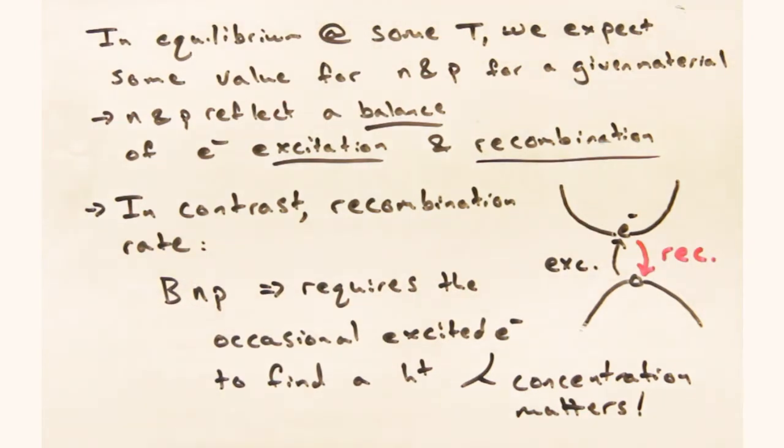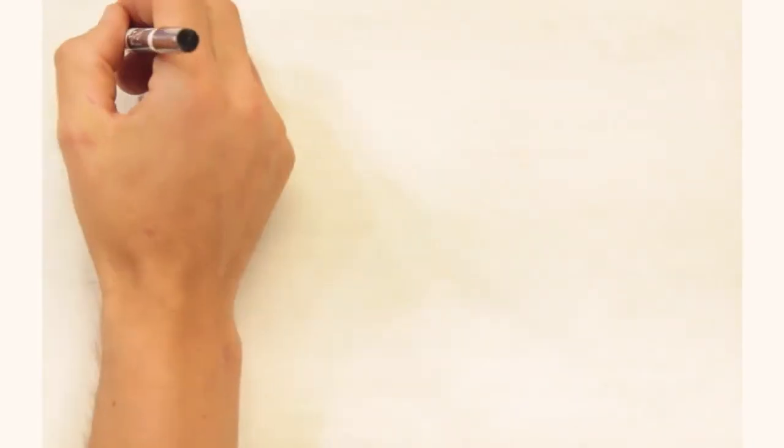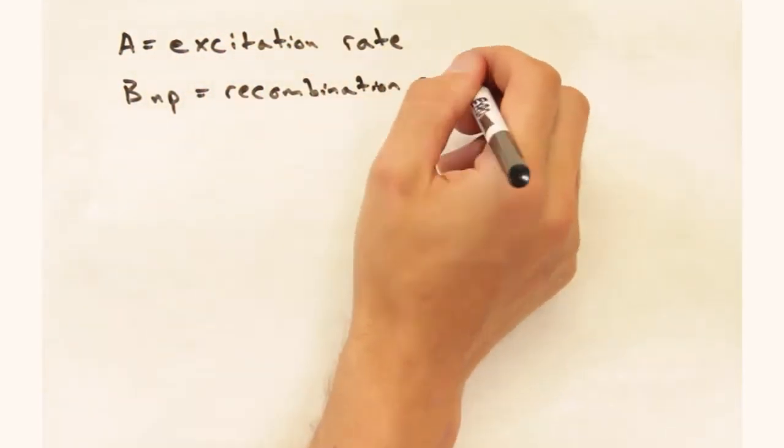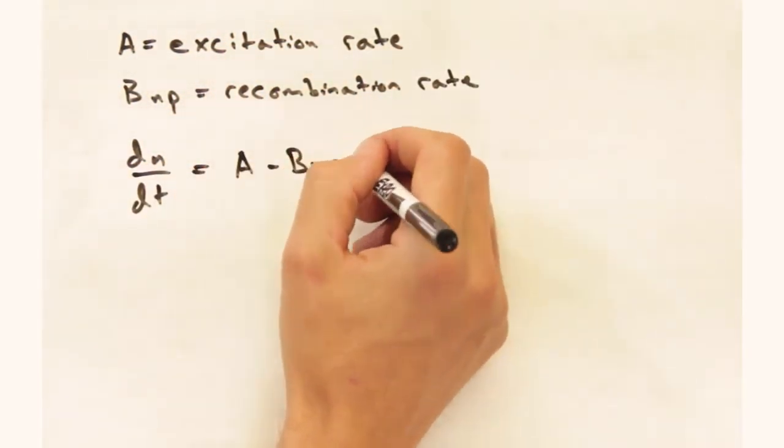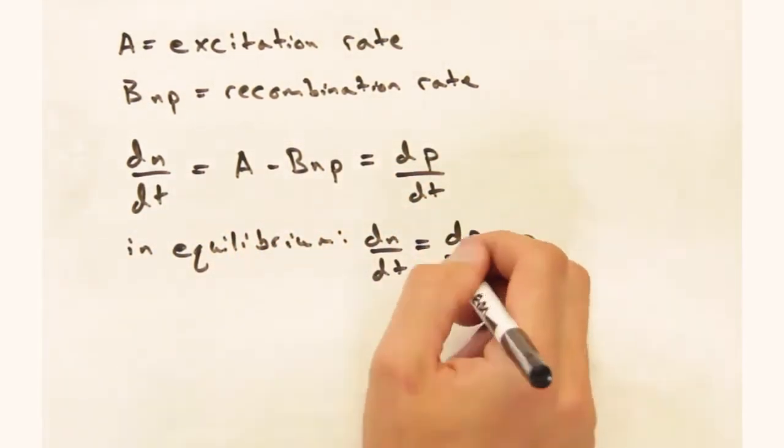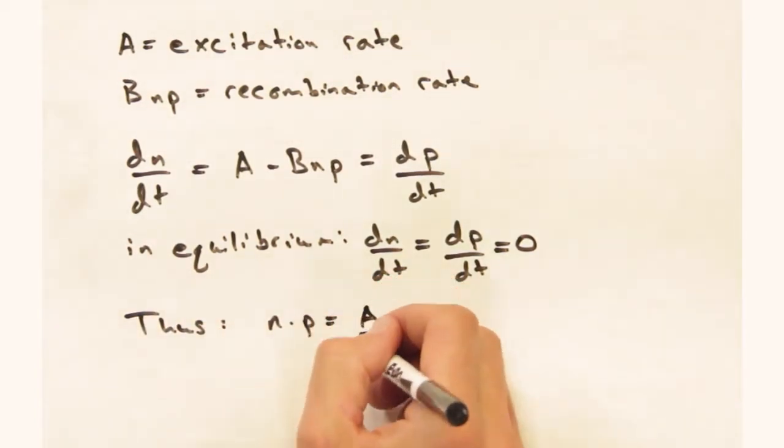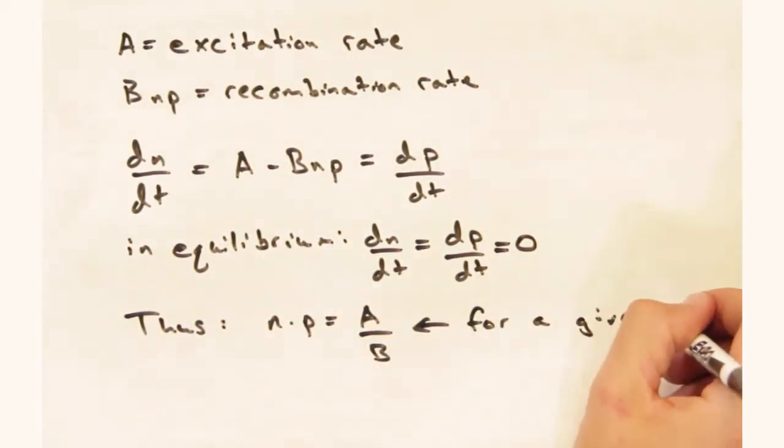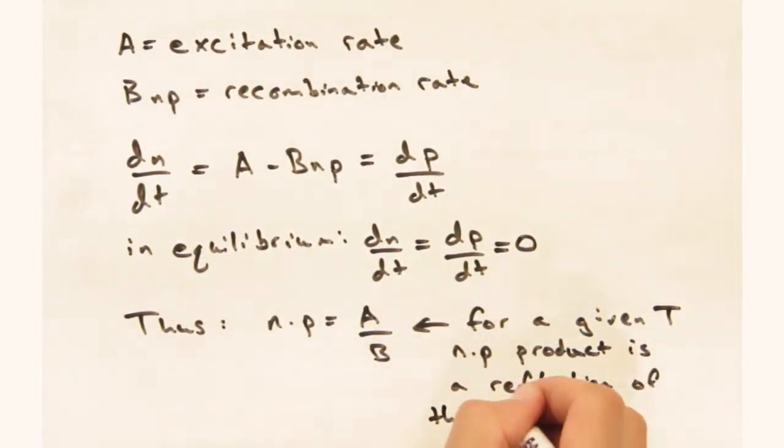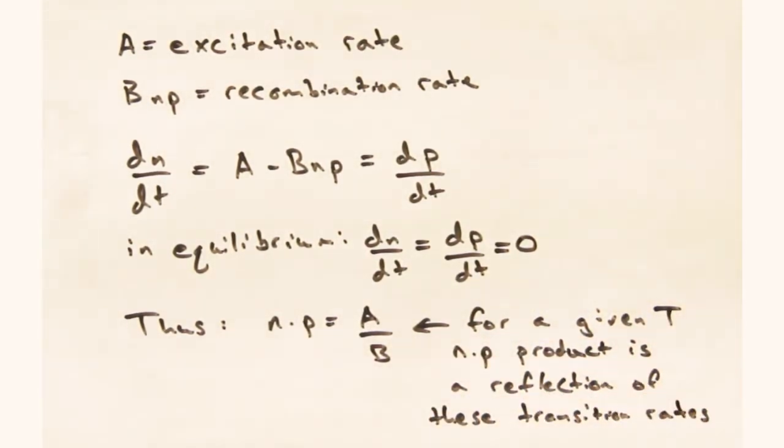Okay, so we can expect that the recombination rate is going to depend on the product of n and p. Together we can say that the change in n with time is given by A as a function of t minus B as a function of t times n times p. But at equilibrium, there should be no change in n with time. So we can solve for n times p as a function of A over B.